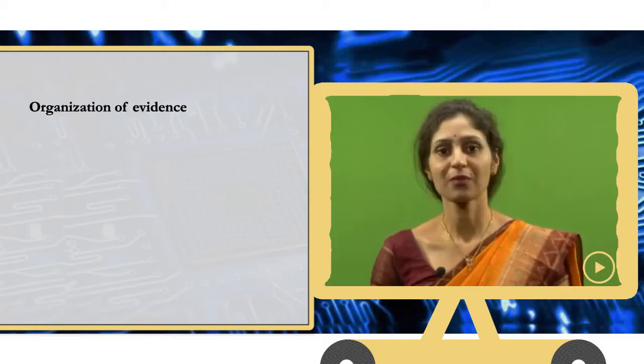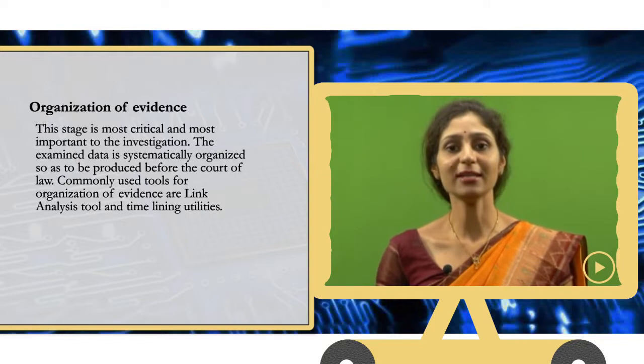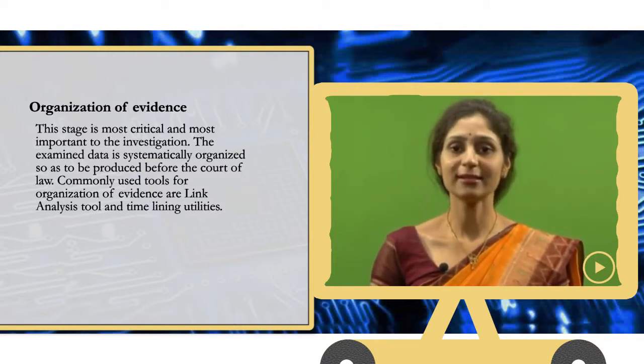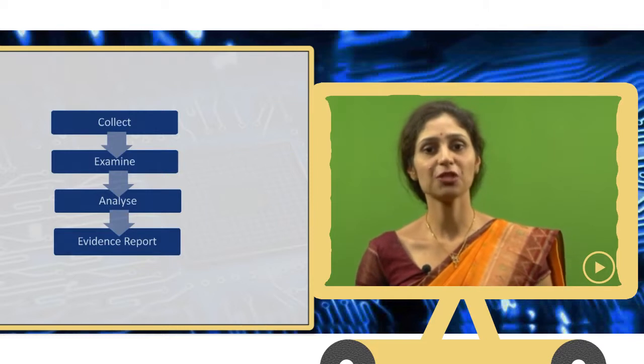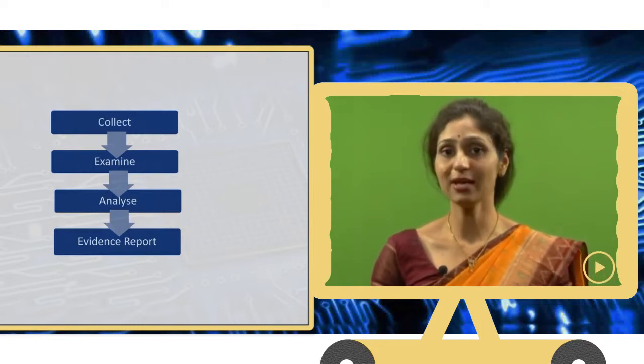And finally, once the data is collected, preserved, extracted and examined, it needs to be organized. The filtered data needs to be organized properly, so that it can be made presentable to be taken to a court. This stage is most critical and most important to the investigation. The examined data is systematically organized, so as to be produced before the court of law. Commonly used tools for organization of evidence are link analysis tool and time lining utilities. You can see the diagram on the screen. The four stages are divided into the collection of evidence, the examination of evidence, followed by analysis of evidence and finally, the evidence report is drafted or report is made, which is taken to the court. This is another pictorial representation of the four stages, which you can see on your screen.